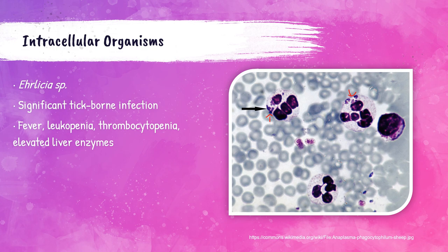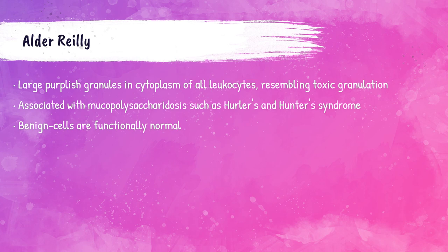Alder-Reilly anomaly is an inherited abnormality of the white blood cells commonly associated with mucopolysaccharidosis — a type of metabolic disorder that is part of the lysosomal storage disease family. This anomaly causes large purplish granules in the cytoplasm of all white blood cell types. It doesn't affect the cells functionally — they are functionally normal — it just makes them look unusual with these large purplish granules.